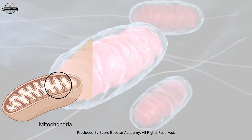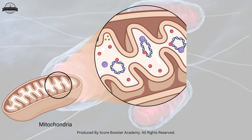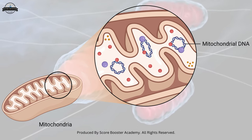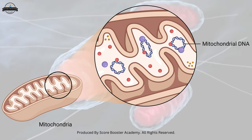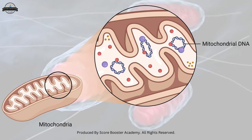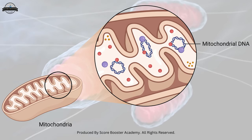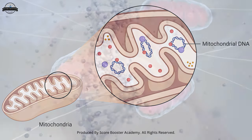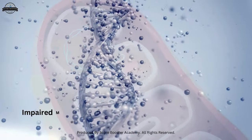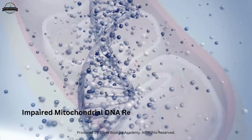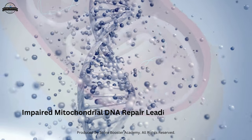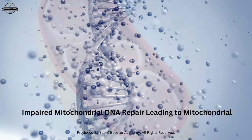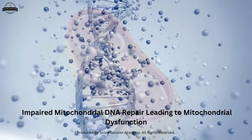Mitochondria have their own DNA, separate from the cell's nuclear DNA. They possess mechanisms to repair DNA damage and maintain the integrity of their genetic material. Impaired mitochondrial DNA repair can lead to mitochondrial dysfunction and contribute to various diseases.